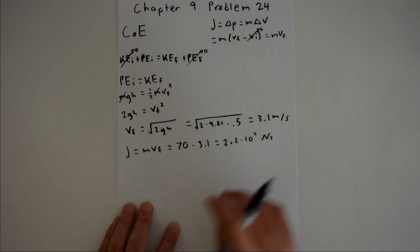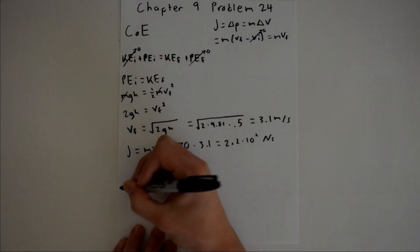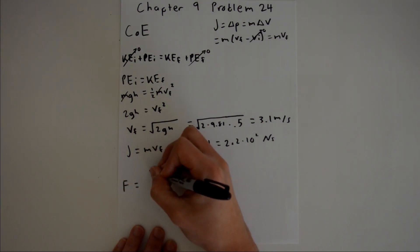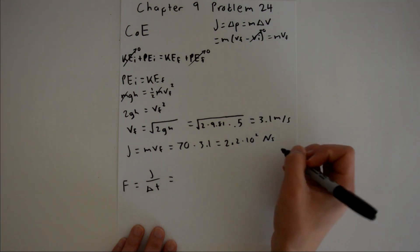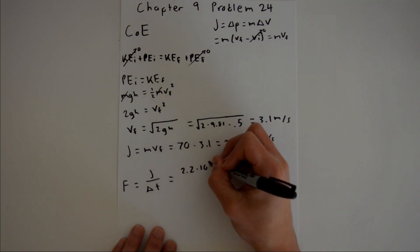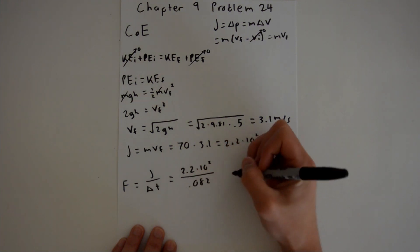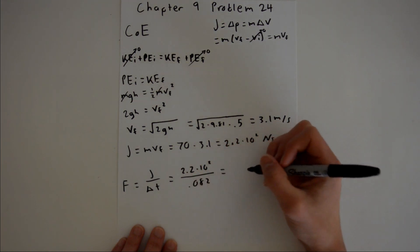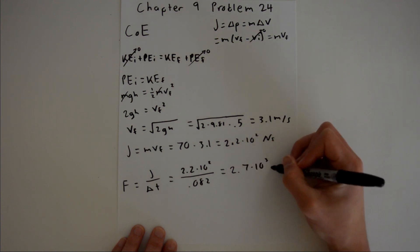For part b, we are asked to find the force, and force is impulse over time, so force equals impulse over our change in time. We just found our impulse, 2.2 times 10 to the second, and our time we are given in the problem as 0.082 seconds. When you plug that into your calculator, you should get 2.7 times 10 to the third newtons.